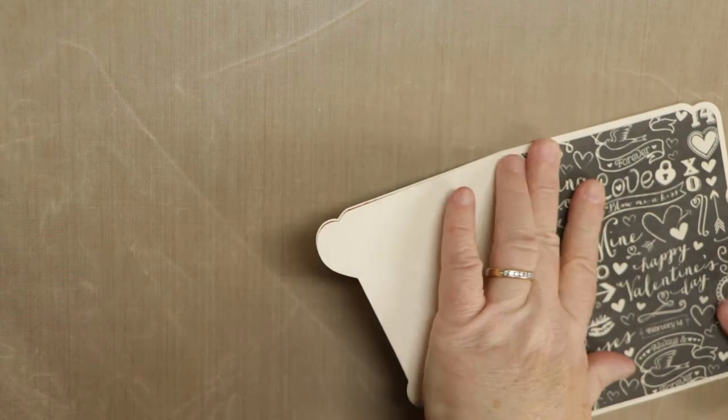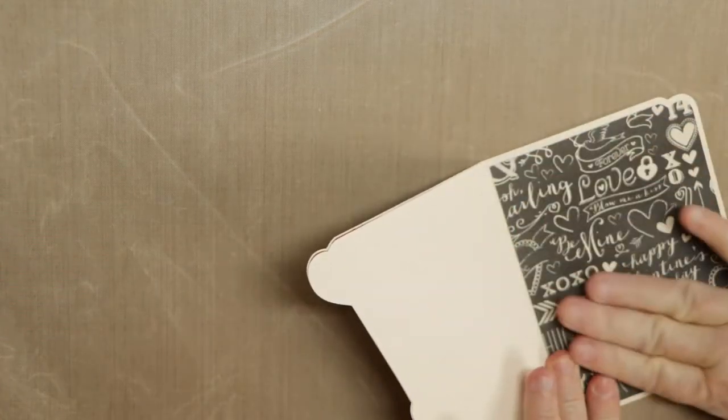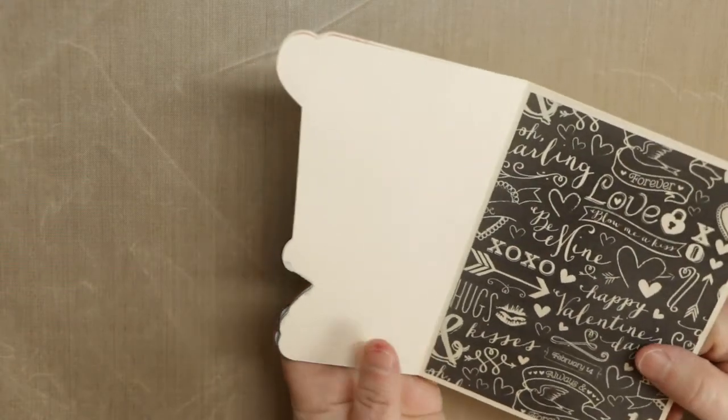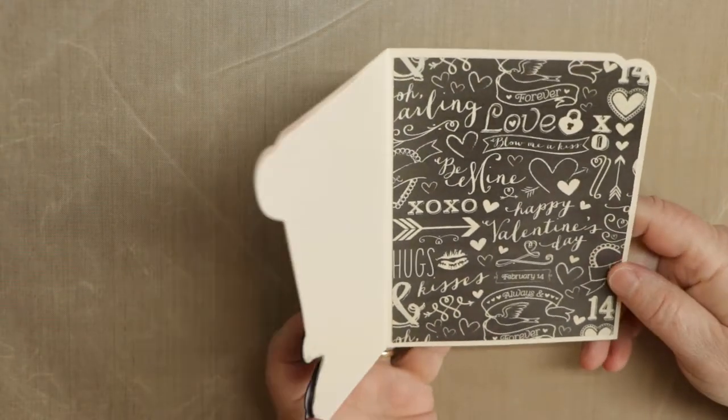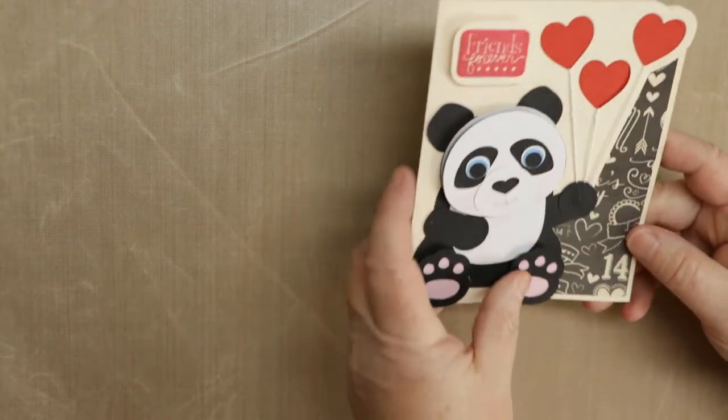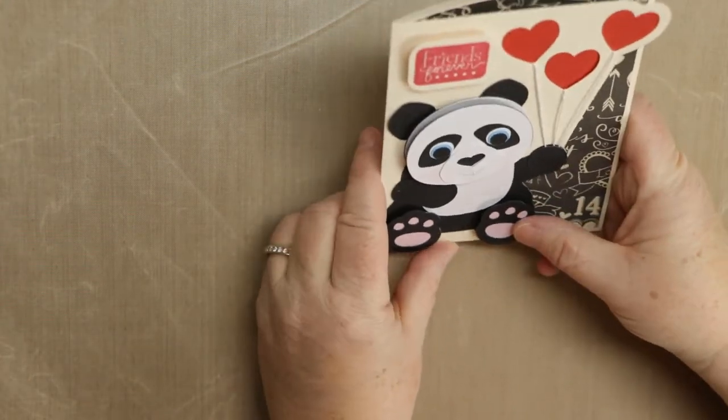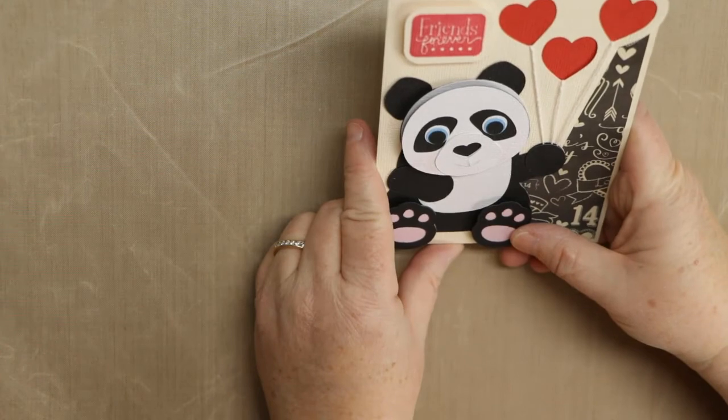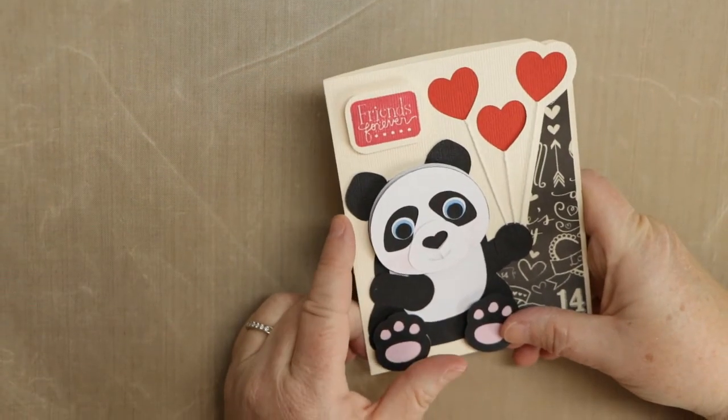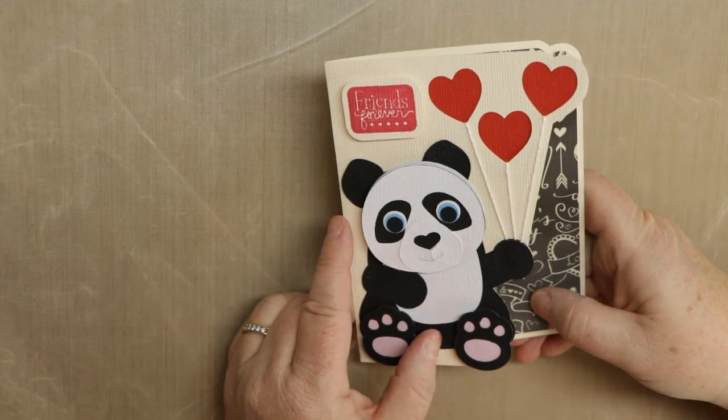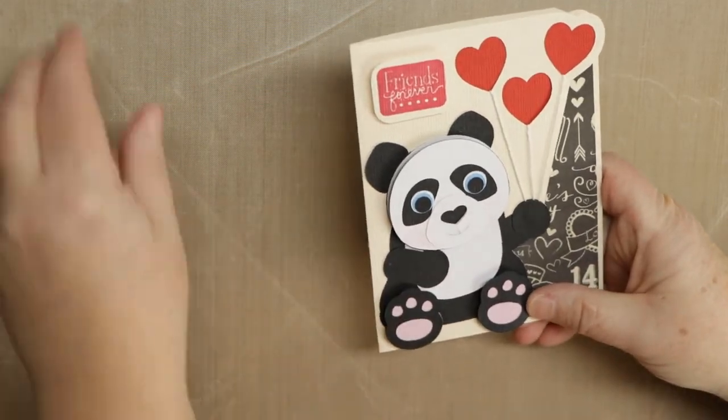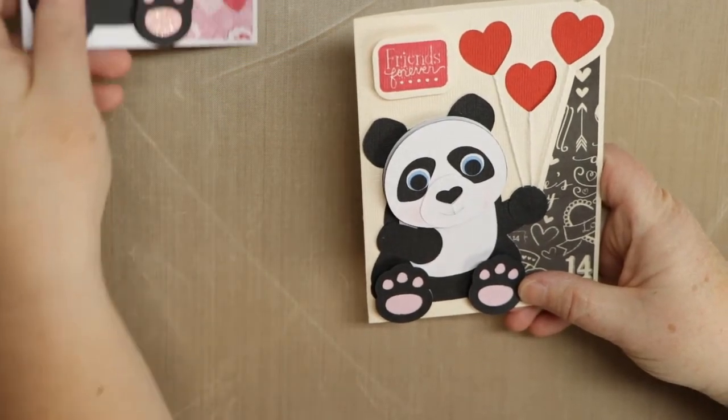Then this is going to complete the card. Just getting it lined up. So there's a place to put your sentiment on the left there or you could just go ahead and add a little piece here that goes underneath. And then you have a cute little panda card that you can use for Thanksgiving, Valentine's Day, or just any time really. It could be a birthday card. It's just a cute card overall I think. And you can just pull that panda off and use it for other things too. So here's two different versions of it.